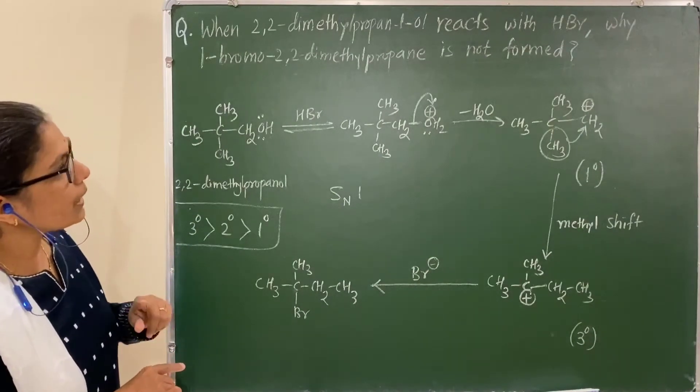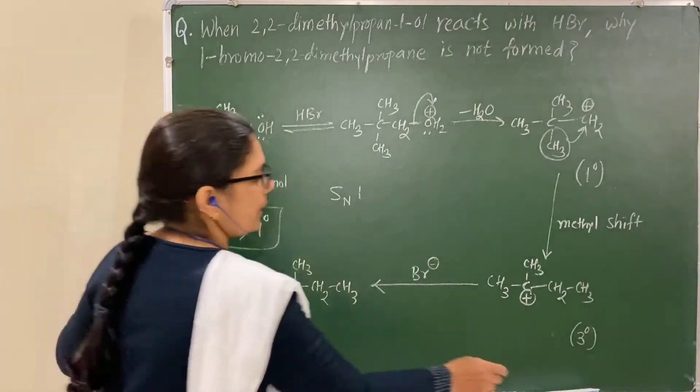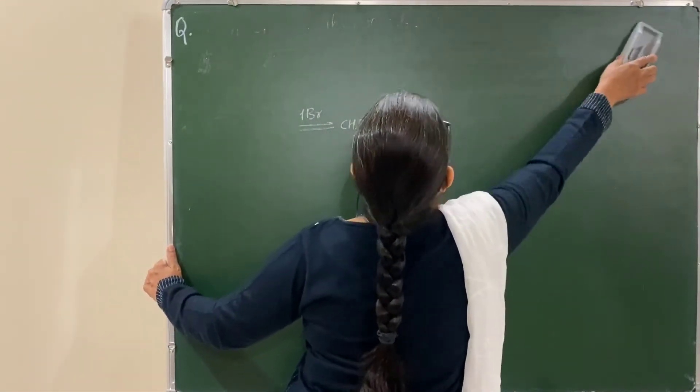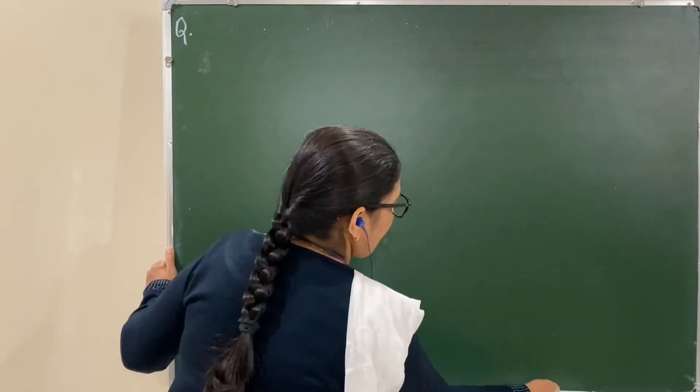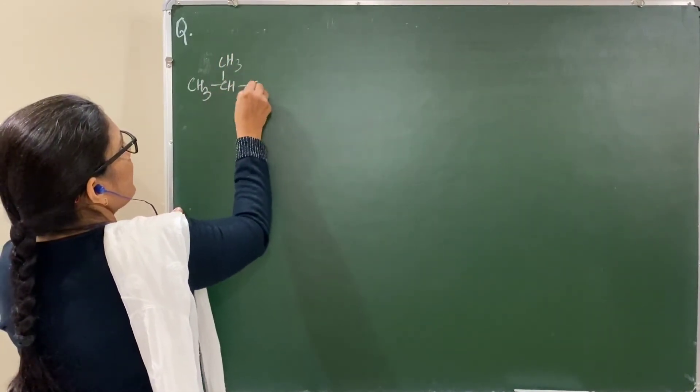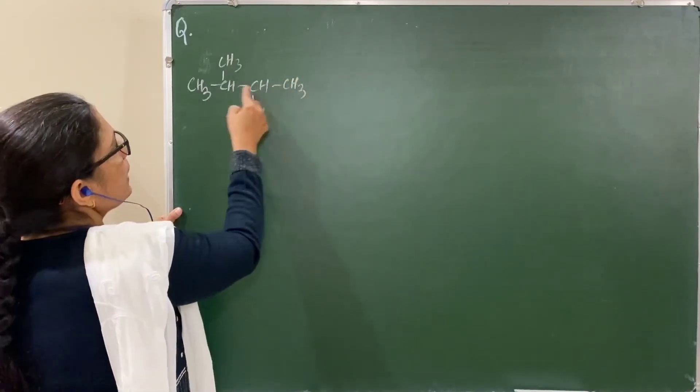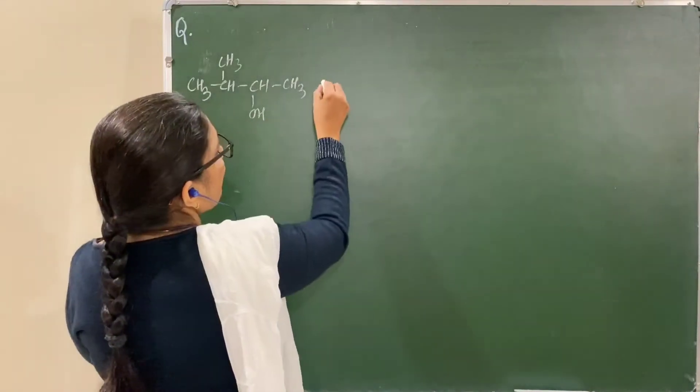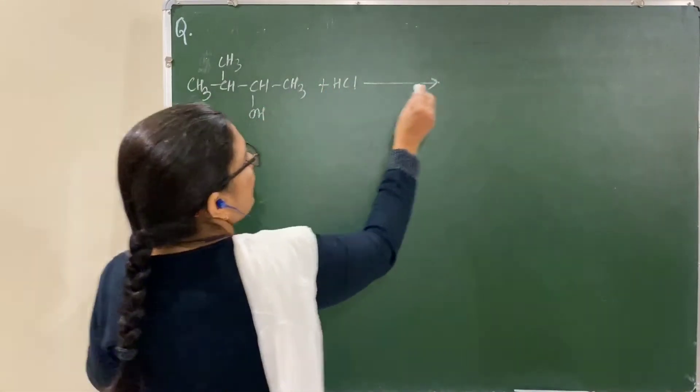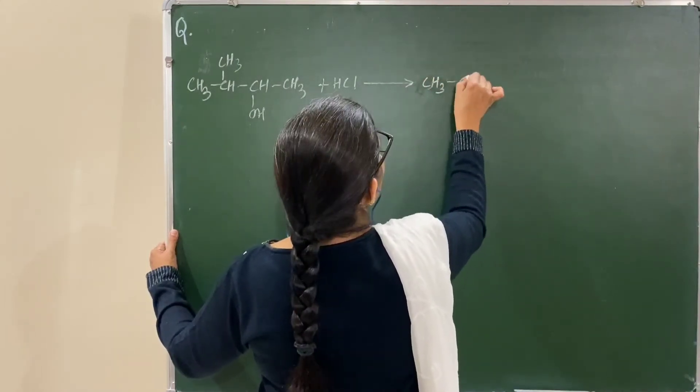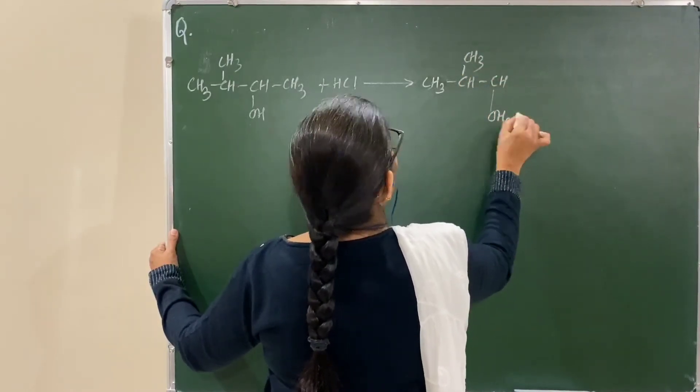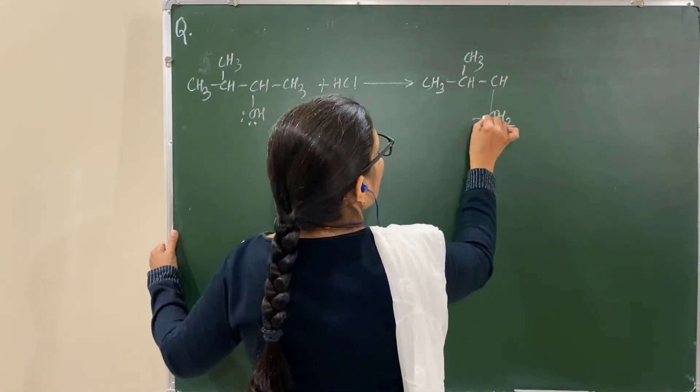I would like to explain one more similar example. Consider a higher secondary alcohol: 3-methyl-2-butanol. It reacts with HCl, hydrogen chloride. Again, protonation takes place at the lone pair of electrons.